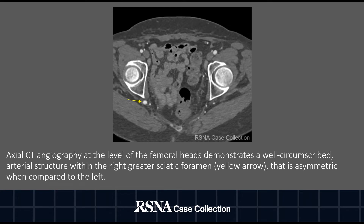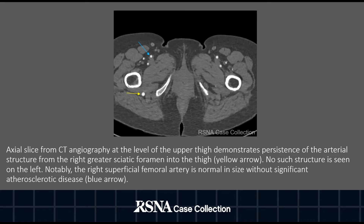Axial CT angiography at the level of the femoral heads demonstrates a well-circumscribed arterial structure within the right greater sciatic foramen, as indicated by the yellow arrow. The structure is asymmetric when compared to the left. An axial slice at the level of the upper thigh demonstrates persistence of the arterial structure from the right greater sciatic foramen into the thigh, as shown by the yellow arrow. No such structure is seen on the left.